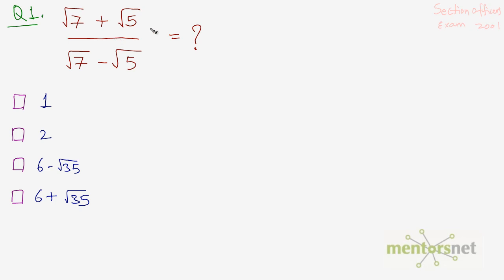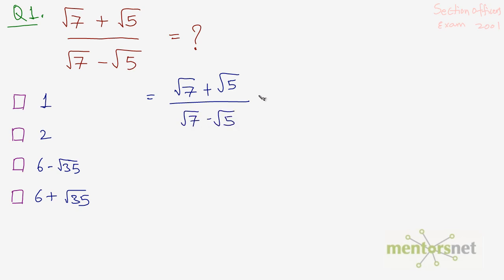We multiply the numerator as well as the denominator by (√7 + √5) so that we can get rid of the square roots in the denominator. So this is equal to (√7 + √5) over (√7 - √5), multiplied by (√7 + √5) over (√7 + √5).